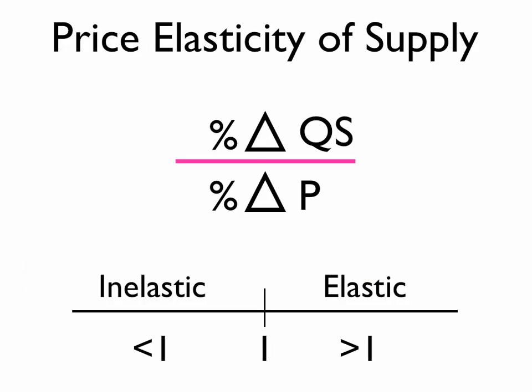In summary, the price elasticity of supply is the percentage change in quantity supplied divided by the percentage change in price. If the value is less than 1, it's considered inelastic. If it's greater than 1, it's considered elastic.